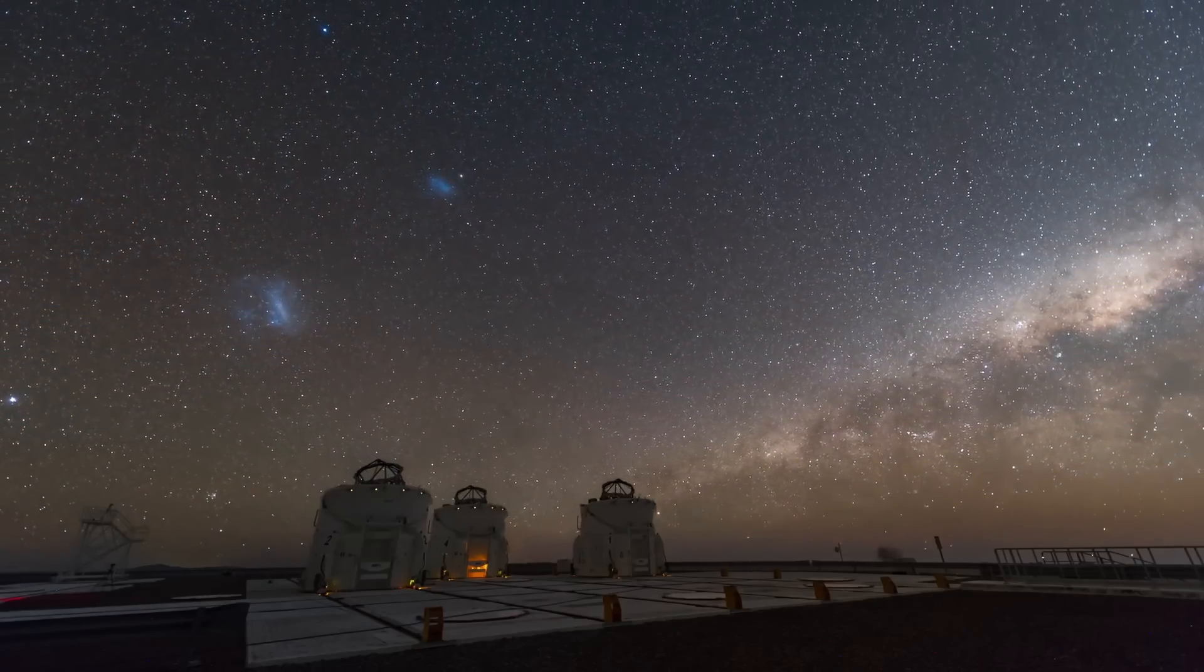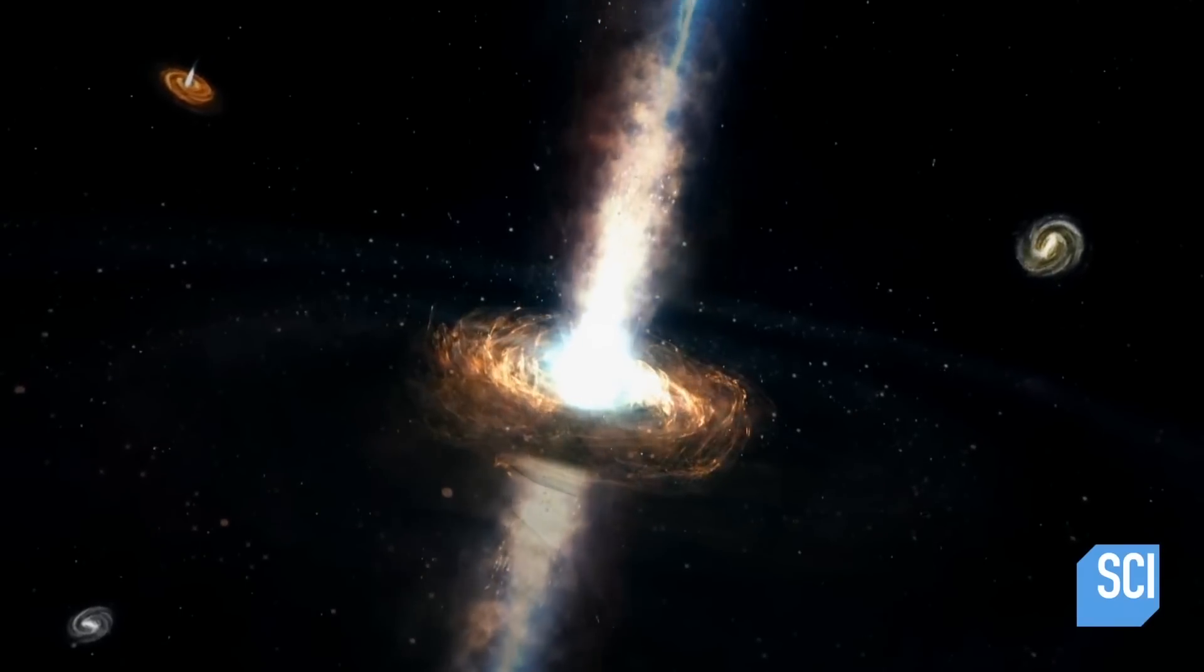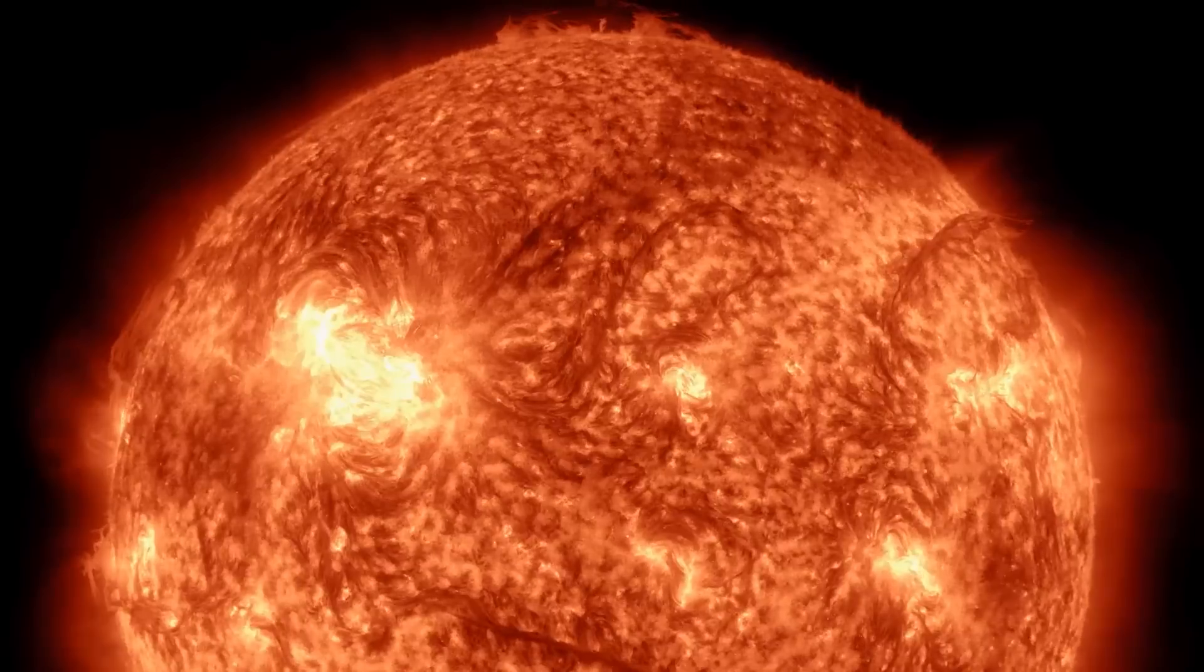NASA telescopes measure the x-ray light. Astronomers use this information to learn more about the properties of a black hole. And here is a quick one.